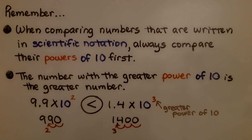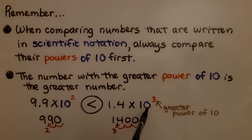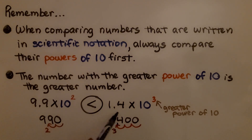Remember: when comparing numbers written in scientific notation, always compare their powers of 10 first. The number with the greatest power of 10 is the greater number. You might think 9 and 9 tenths would be greater than 1 and 4 tenths, but 9 and 9 tenths times 10 to the second power is only 990, while 1 and 4 tenths times 10 to the third power is 1,400 — that's the greater number.